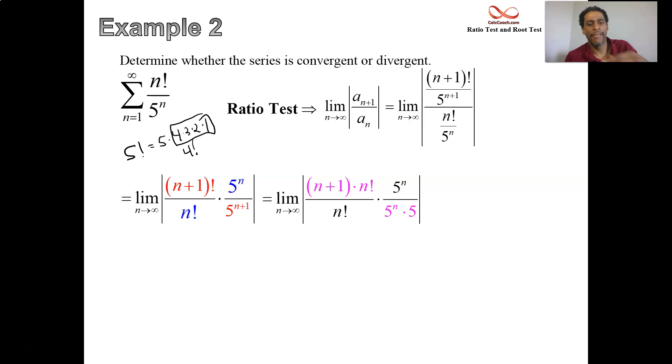We have n factorials canceling, five to the n's canceling, and we're simply left with n plus one over five. We are doing the limit as n goes to infinity. That's definitely going to be an infinite limit. The point is that it's greater than one, so it diverges.